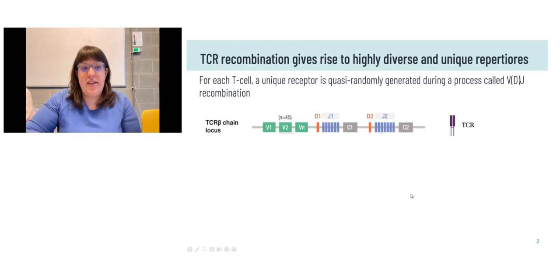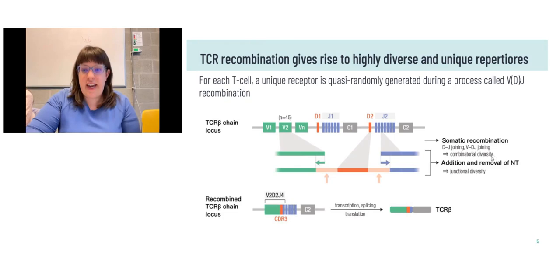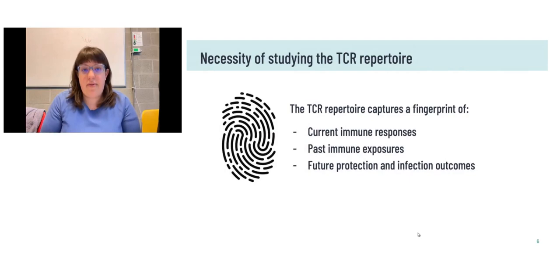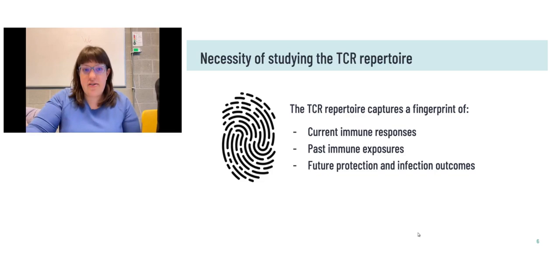T-cell receptors gain the capacity to recognise such a unique diversity of epitopes through recombination of V, D and J junctional genes. These undergo somatic recombination and can also get the addition of non-genomic nucleotides added to the sequences, creating novel sequences on both B-cell and T-cell receptors to recognise different epitopes. This allows the TCR repertoire to capture both current immune responses, past immune exposures, and protection from future infections.